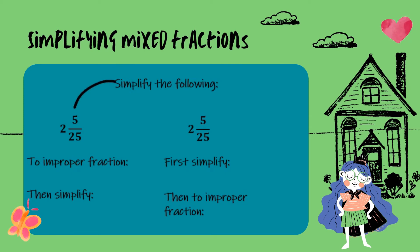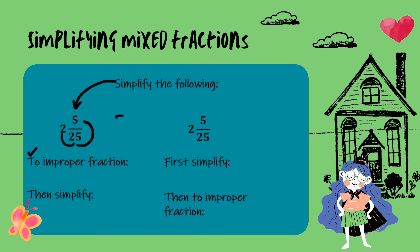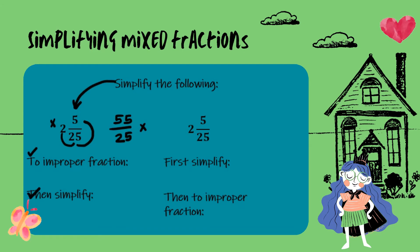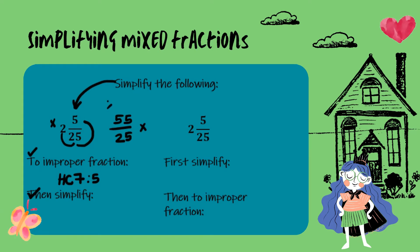When simplifying a mixed fraction there are two ways we can do this. We can first change the mixed fraction into an improper fraction. 2 times 25 is 50, and 50 plus 5 is 55 over the unchanged denominator of 25. We then simplify by finding the highest common factor of 55 and 25, which is 5. Dividing both numerator and denominator by 5 gives us 11 over 5.